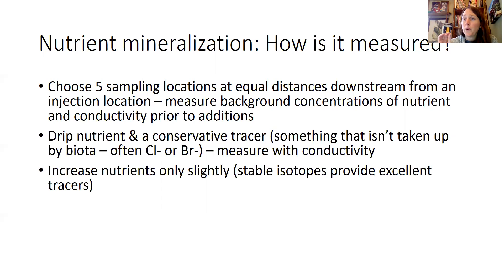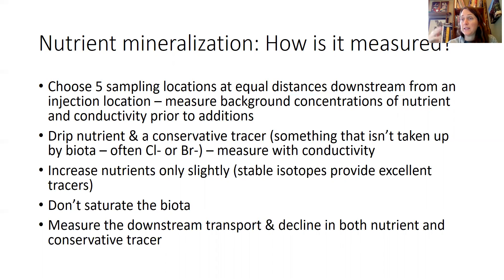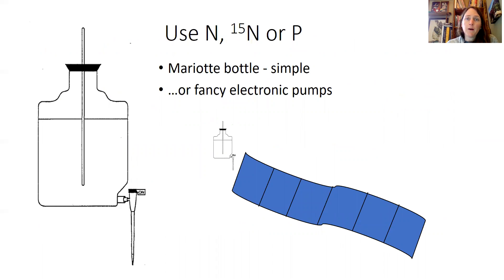Adding chloride or bromide will tell you how much of the stuff you're adding has made it downstream. You probably want to only increase the nutrients just slightly — you don't want to cause damage to the system. Stable isotope nutrient additions can be really helpful, because you can follow the isotopic concentrations through. You don't want to saturate the biota. Then you measure the downstream transport and decline in both the nutrient and the conservative tracer. The conservative tracer tells you how much the nutrient would travel without being taken up by biota at all, while measuring the nutrient tells you how much is being taken up.